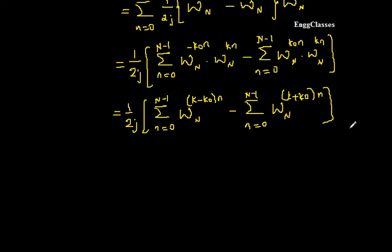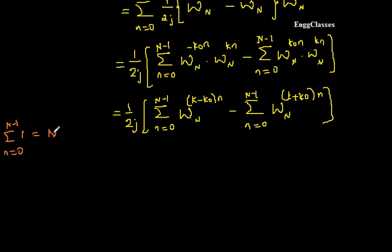In the first term, if I put k equal to k₀, W_N^((k−k₀)·n) becomes W_N^0. Anything to the power 0 is always 1. So summation from n=0 to N−1 of 1 equals N. This is a standard result from the geometric series, valid under the condition k = k₀.